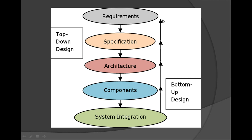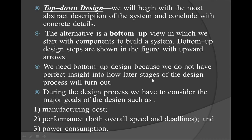The first step is the requirement — what exactly the various components are and what the application requires. According to the requirement we go for the specifications: what are the specific components, the specific code, the specific values for the capacitor and register. Then we go for the architecture, select the components accordingly, and finally the system is integrated.